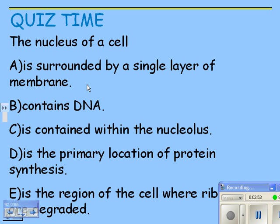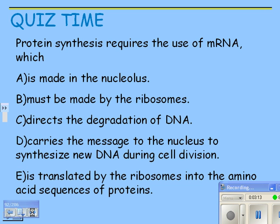The nucleus of a cell is surrounded by a single layer of membrane — no, it's surrounded by a double layer. Contains DNA — that is true. The DNA is contained within the nucleolus — no, the nucleolus is inside the nucleus. Is the primary location of protein synthesis — no, that's ribosomes outside the nucleus. Is the region where ribosomes are degraded — no. The correct answer is that it contains DNA.